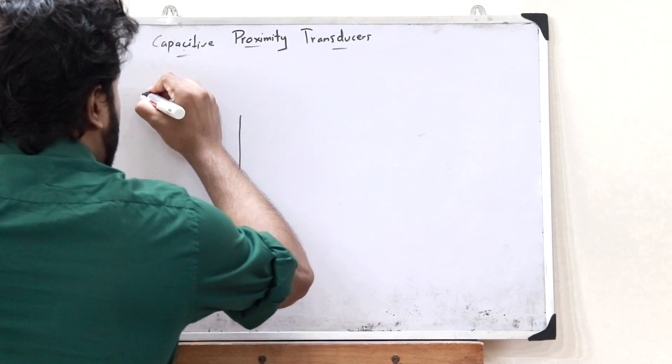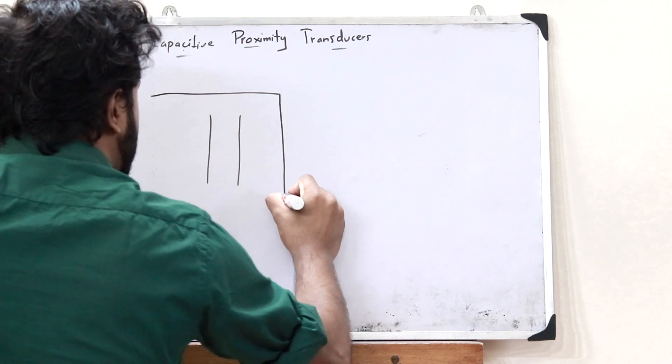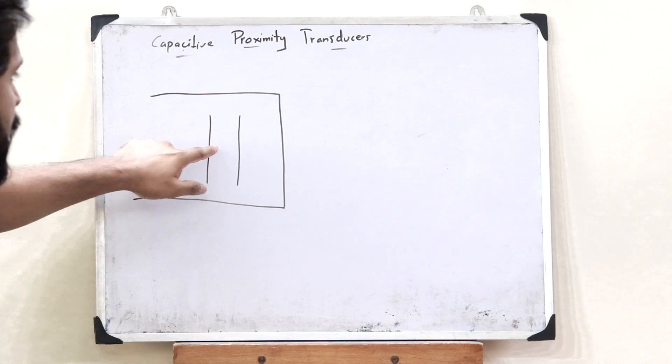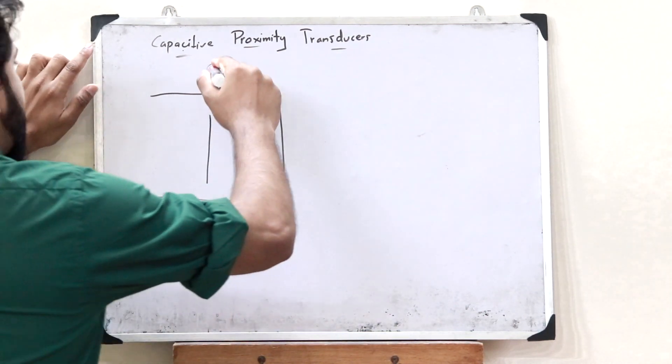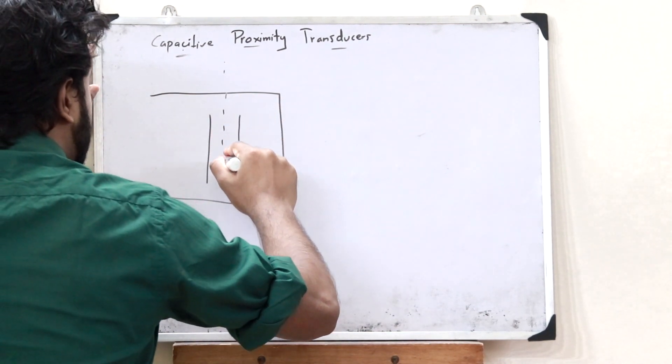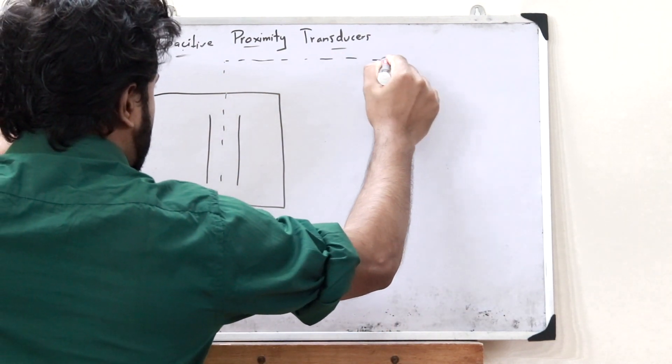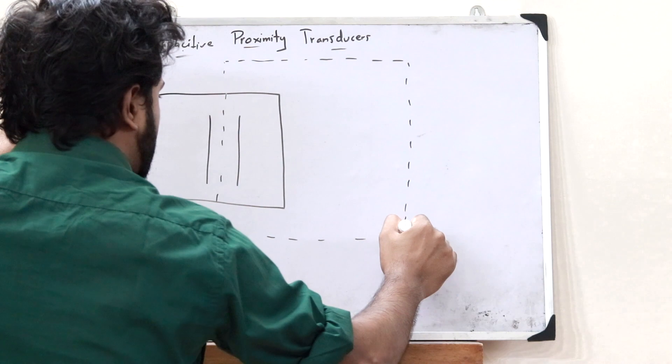Inside a particular proximity transducer, we have a parallel plate capacitor like this. It has two parallel plates. And now let us consider a particular area like this.